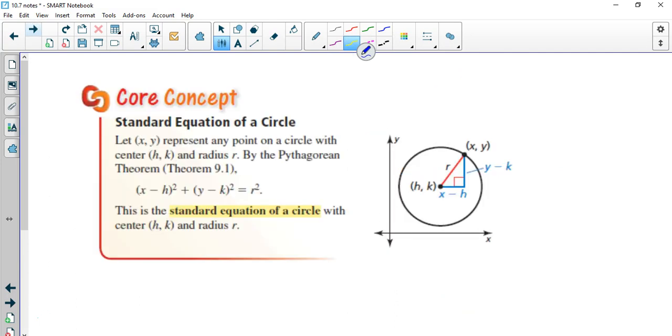Okay, standard equation of circle. So X and Y represent any point on a circle. The center is H comma K. And the radius is going to be R. Using the Pythagorean Theorem, we have X minus H squared plus Y minus K squared equals R squared.